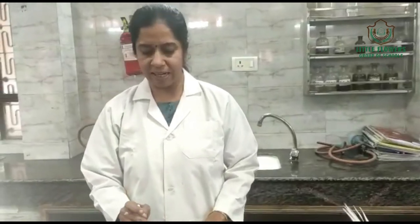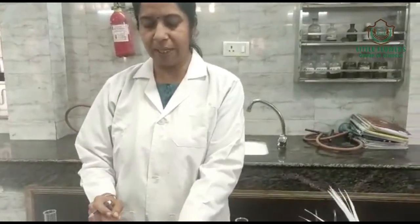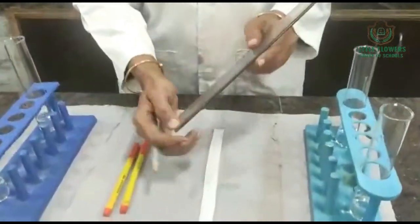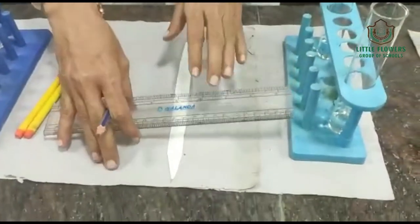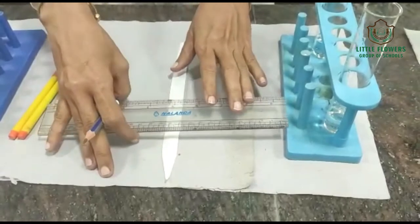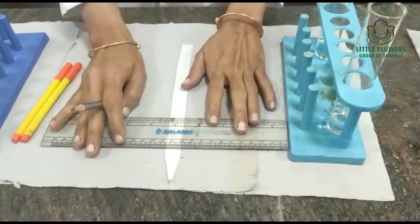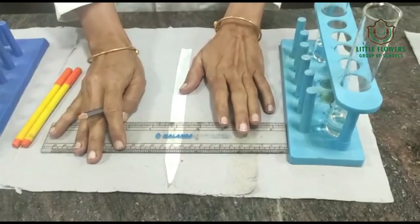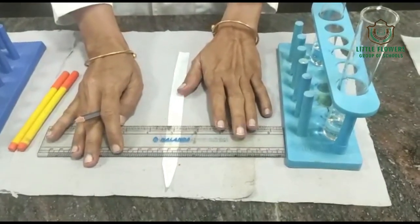Here we start the experiment to draw the reference line. Again, the aim I am repeating: to separate the color component by chromatography and to find the RF value of each component.